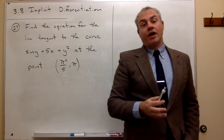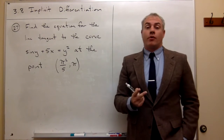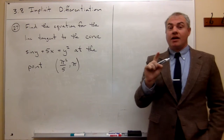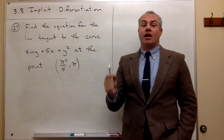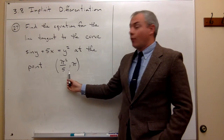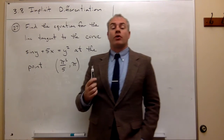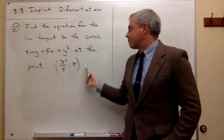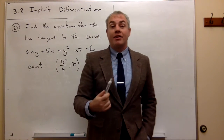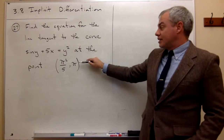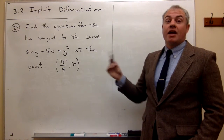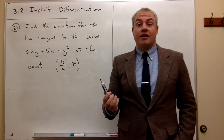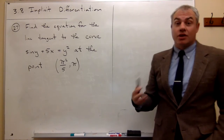To find the equation for a tangent line we need two things: a point on that line and the slope of the line at that point. We already have a point, so what we're looking for is the slope of this curve at this point. We need to find dy/dx, plug in this point, and find the slope. Then we can use the point-slope equation to find the equation of the tangent line.